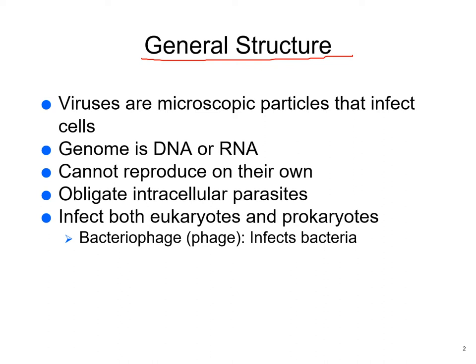The general structure of viruses: they're microscopic particles that infect cells. They're basically made up of a genome of DNA or RNA wrapped in a capsule of a sort, depending on the type of virus. They cannot reproduce by themselves. They are acellular — no cells. They are obligate intracellular parasites, meaning they have to have a cell, and they affect both eukaryotes — that's animals and plants — as well as prokaryotes such as bacteria and archaea.